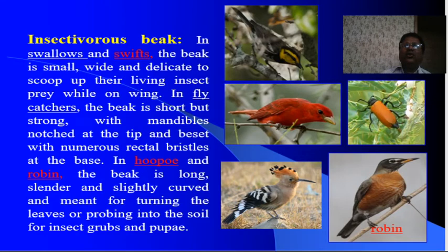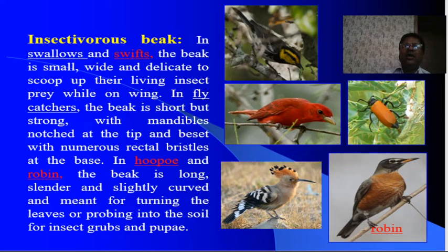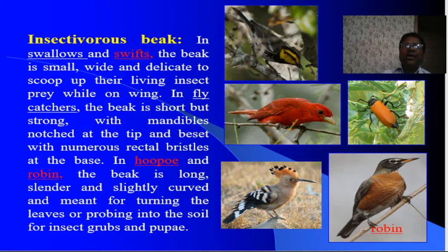This slide shows the insectivorous beak. Examples are swifts, hoopoe, robin, etc. In swifts and swallows, the beak is small, wide and delicate to scoop up living insect prey while on the wing. In flycatchers, the beak is short but strong, with mandibles notched at the tip and beset with numerous rictal bristles at the base. In hoopoe and robin, the beak is long, slender and slightly curved, meant for turning leaves or probing into the soil for insect grubs and pupae.